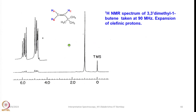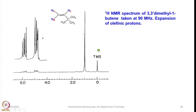A similar spectrum is also shown here recorded at 90 megahertz; again you can see the pyramidal effect, which clearly shows it is also an ABC spin system. But if you record it at 400 megahertz it can be further simplified to appear as an AMX spin system, like what I showed in the previous slide.